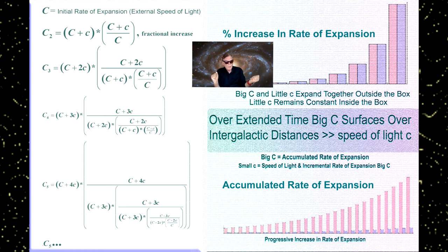But the redshift is telling us how much they're receding apart into the outside infinite void. So over extended periods of time, an additional progressive component of redshift will surface because of the accelerated expansion.